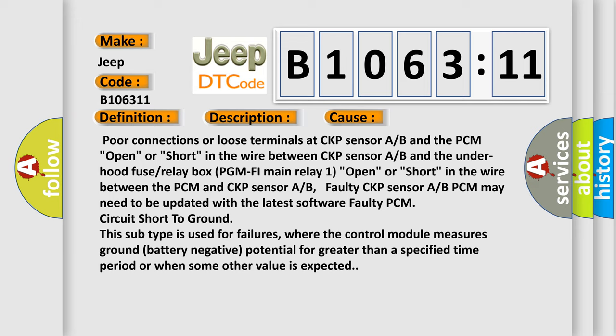Faulty PCM circuit short to ground. This subtype is used for failures where the control module measures ground battery negative potential for greater than a specified time period or when some other value is expected.